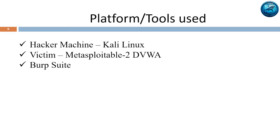In this demonstration I will be using different platforms and tools. Kali Linux will be my hacker machine and my victim machine will be Metasploitable 2 running DVWA. I will use a very popular web application penetration testing tool called Burp Suite to crack the password and perform the brute force attack on DVWA.